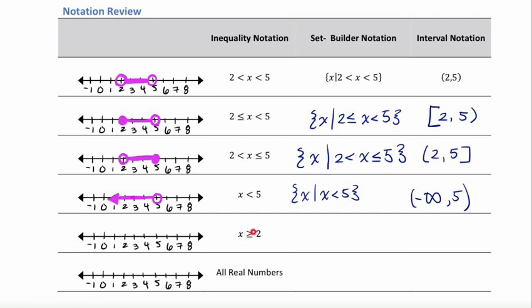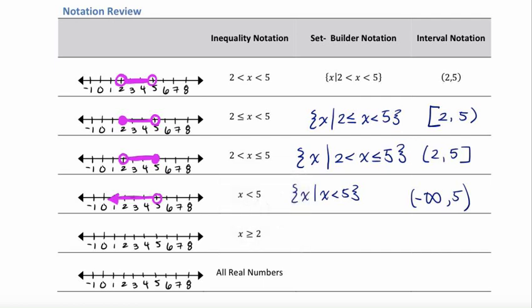Now let's look at x is greater than or equal to 2. We write the set of all x such that x is greater than or equal to 2. In interval notation, 2 is our smallest value on the left, and we want our x's to go out infinitely to the right — positive infinity. Just like you wouldn't write positive 1 to represent 1, we don't need a positive symbol in front of infinity. On the graph, we fill in the dot at 2 because of the equals sign, and draw our arrow off to the right.